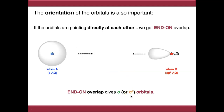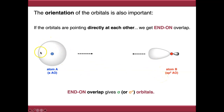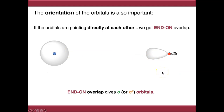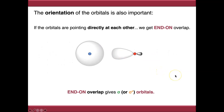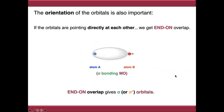Just to give an example, using an s orbital rather than a hybridized orbital shows it works exactly the same way. An s orbital is obviously spherical, but this counts as end-on overlap because it's pointing directly at the other atom. So we get constructive end-on overlap, which gives a sigma bonding molecular orbital.